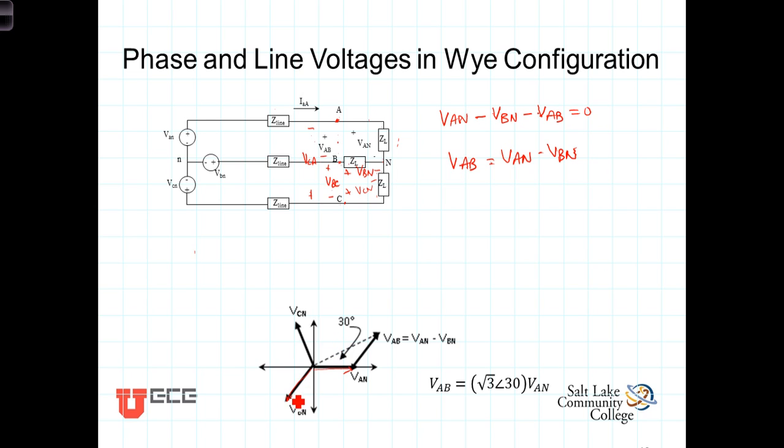The way you subtract is you flip it 180 degrees and add, just like vectors. So, take this, flip it around to here, and then tip to tail it. So that, here's VAN plus a negative VBN gives us,